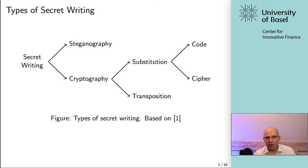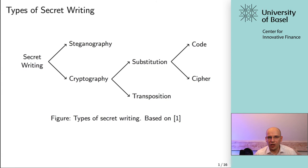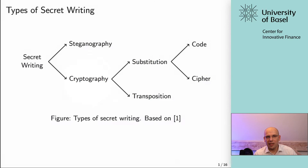Let's get started with a quick definition of cryptography. Cryptography, as you can see on this slide, is actually a branch of secret writing. The idea of secret writing is that you have some information you don't want to share with everyone — some information that has to be hidden in some form. With cryptography, everyone is aware that the information is present, but it is modified in a way that it cannot be read by somebody who doesn't know a secret.